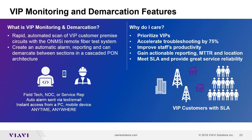VIP monitoring and demarcation features involve setting up a rapid automated scan of VIP customer premises. We monitor those circuits with a remote fiber test system — a totally automated, hands-off process that creates alarms automatically. Reporting can demarcate between sections of the network.